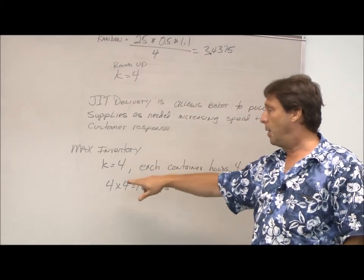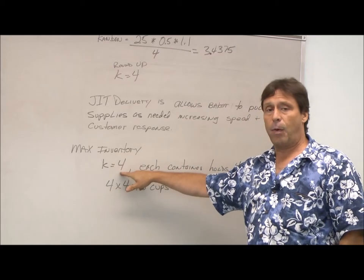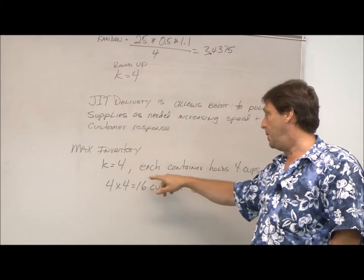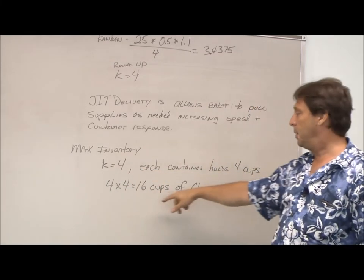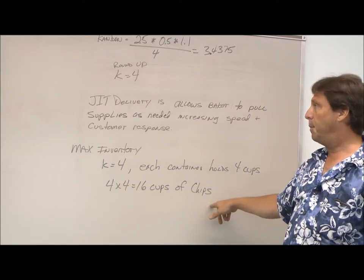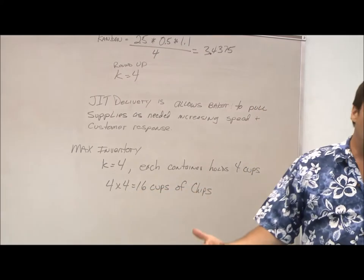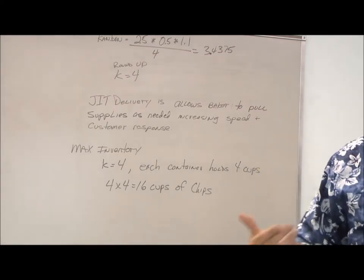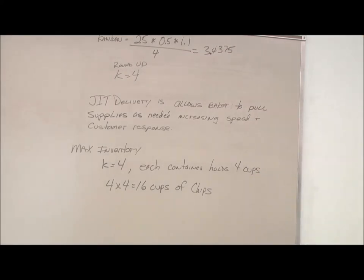Because our max inventory is - we're only going to have four Kanban systems. So each container holds four cups. So four times four is 16 cups. Roughly, that means that our supplier's got to deliver eight or nine times during the week in order to keep us in production.